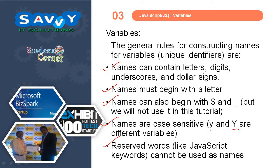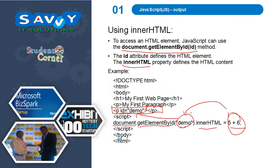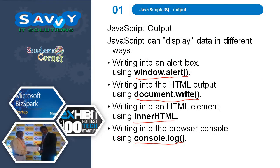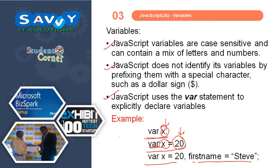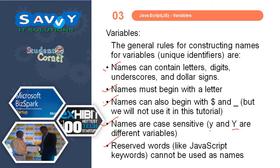In this video we learned about output statements in 4 ways: window.alert, document.write, innerHTML, and console.log. We also learned about data types: boolean, integer, float, strings, arrays, and objects — sometimes arrays also act as an object. There is no need to mention the data type when creating a variable. We also learned about variables and the rules for creating them.